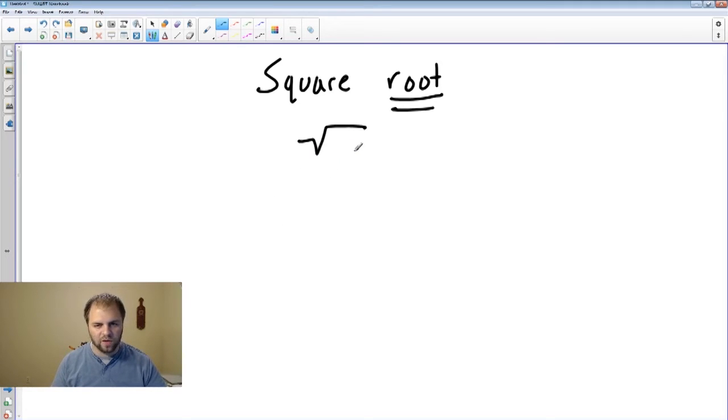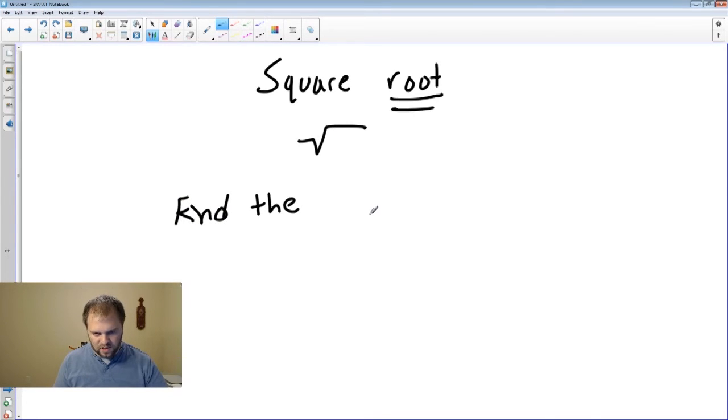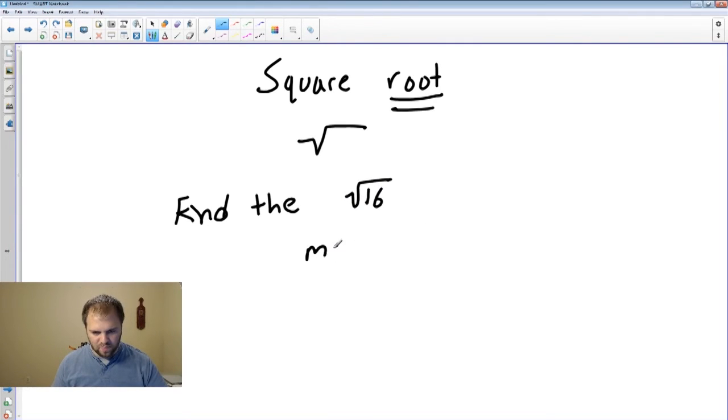You've probably seen that before. It looks like a little heartbeat monitor sign. This is a square root symbol. So if I say, find the square root of 16, find the square root of 16, that's what this is saying. I'm essentially just asking you to find out what M squared equals 16. Find M. That's all I'm asking you to do. In this case, when I say find the square root of 16, I'm writing it out as M squared equals 16 and find M.